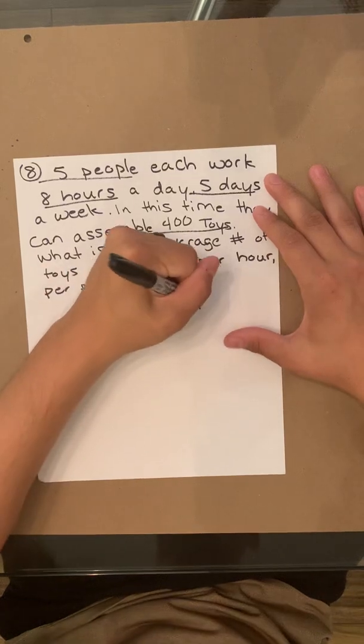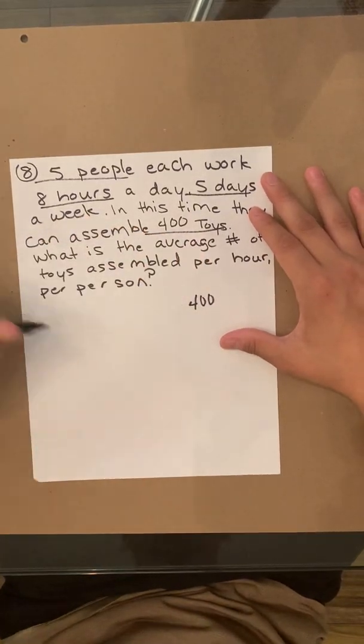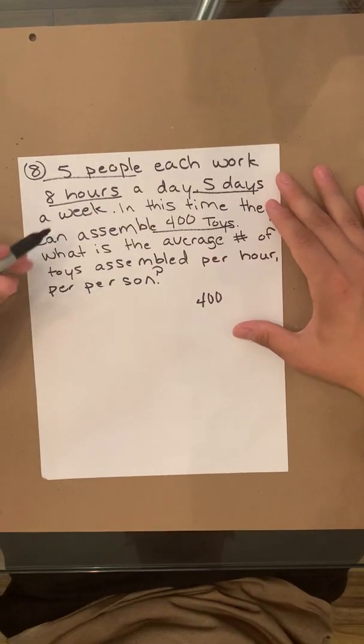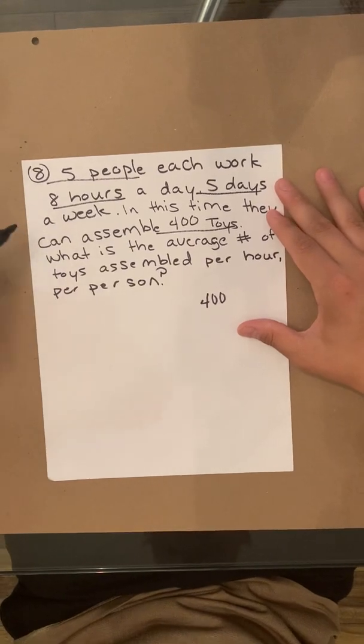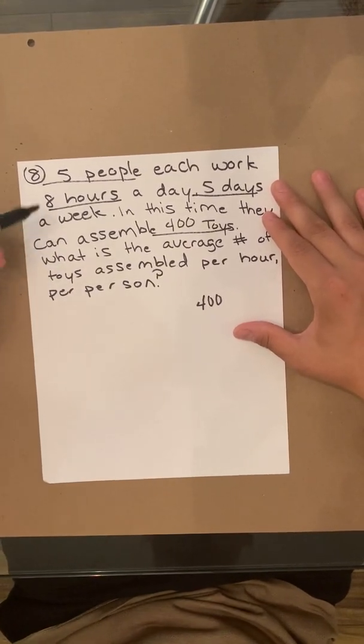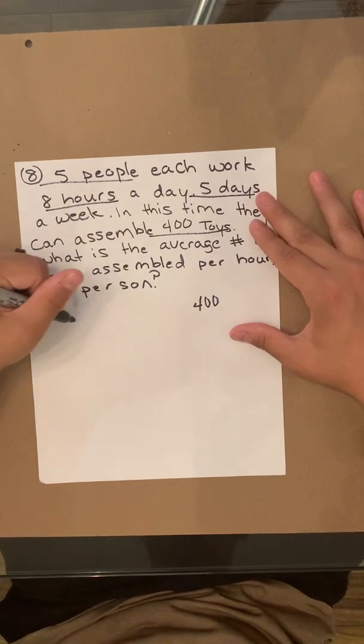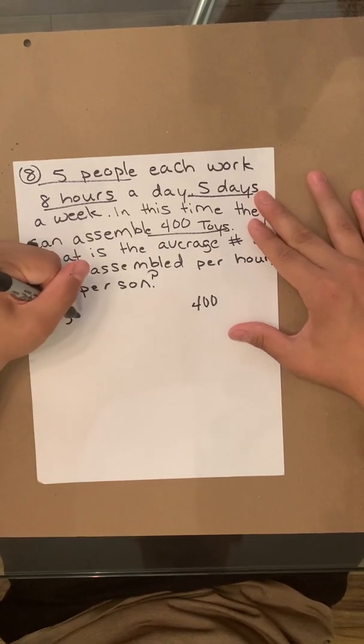400 toys. So we know for a fact 400 is the total. Now what we're going to do is we're going to multiply five people by eight hours a day by five days. So it's going to be five times